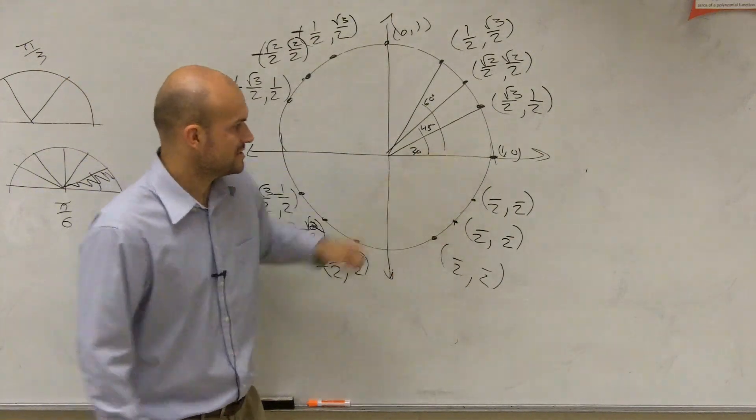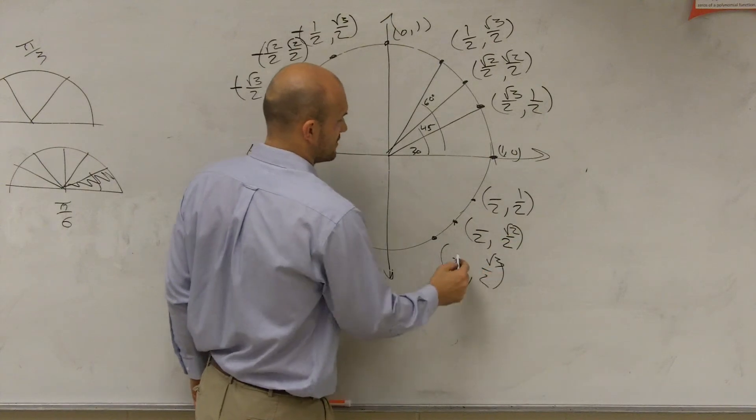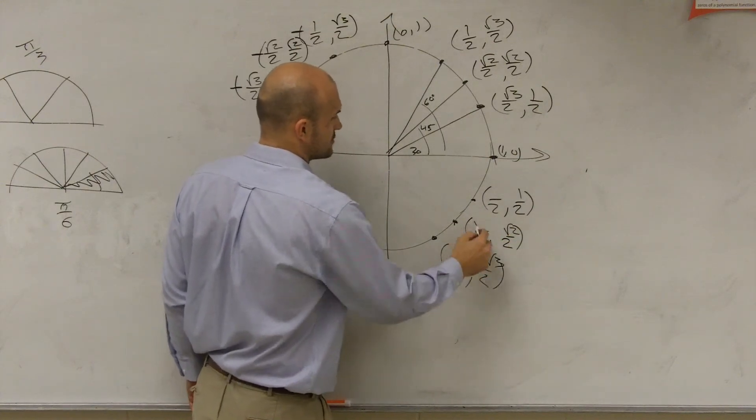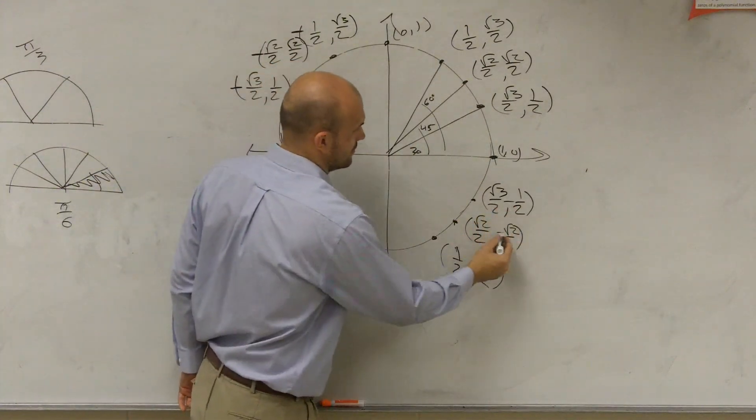Then we go to this one. So this one is going to be square root of 1, square root of 2, square root of 3. Square root of 1, square root of 2, square root of 3. But in the fourth quadrant, what's negative? Only the y's.